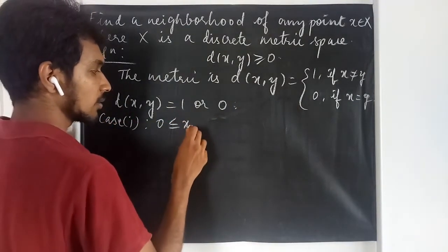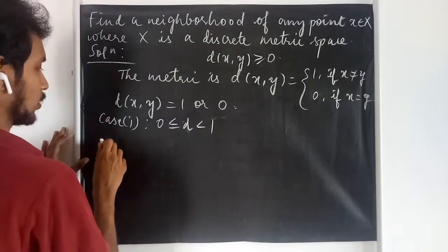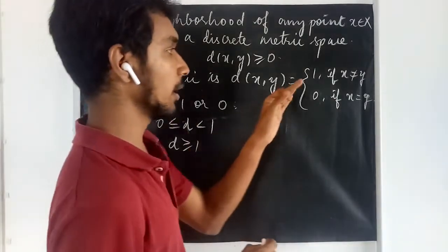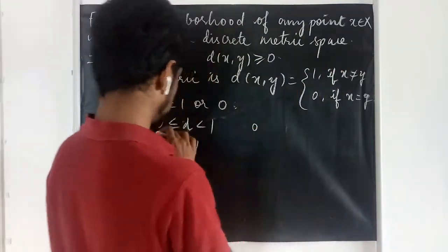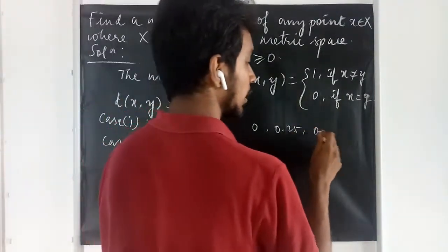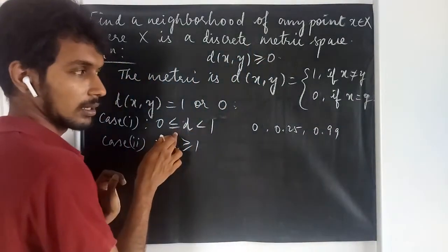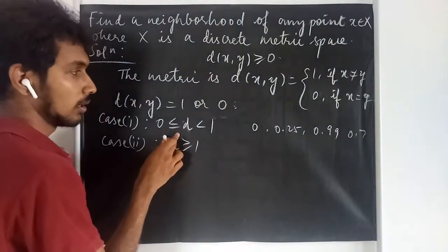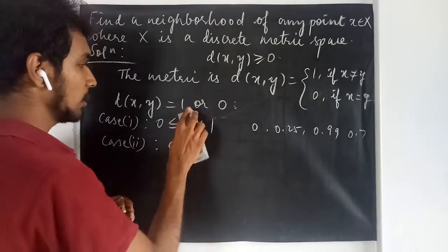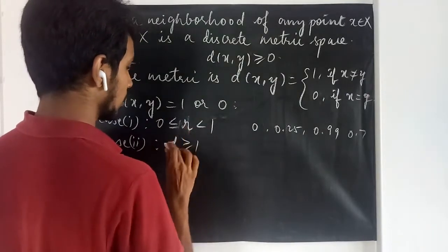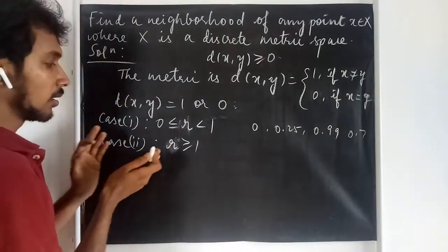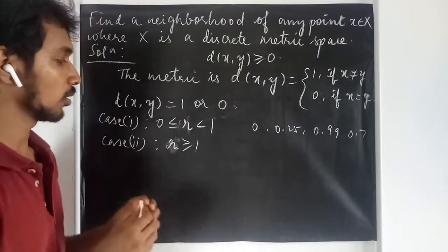With this, we can segregate into two cases based on the radius. Case 1: 0 ≤ r < 1. Case 2: r ≥ 1. Since d only takes values 0 or 1, any radius value like 0.25, 0.99, or 0.7 falls under case 1, while any radius ≥ 1 falls under case 2.